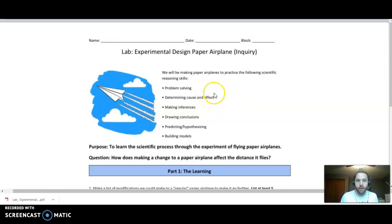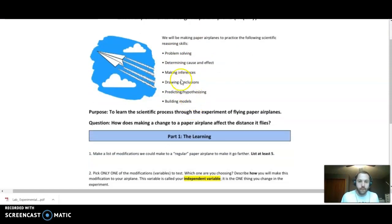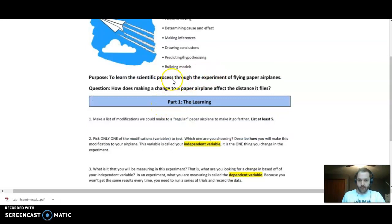This is where things actually become really detailed because you need to think about how everything can impact the outcome of an experiment. We do this through the realm of designing a paper airplane. In this lab, we're going to be learning problem solving, determining cause and effect, making inferences or observations, and drawing conclusions. The purpose is to learn the scientific process and experimental design through the experiment of flying paper airplanes.